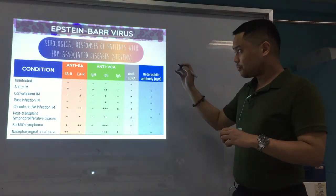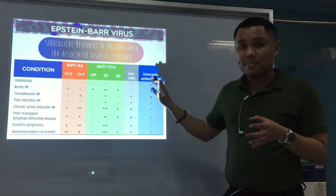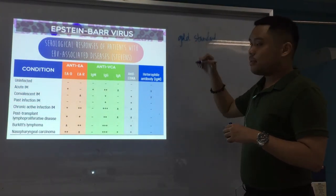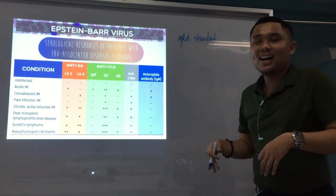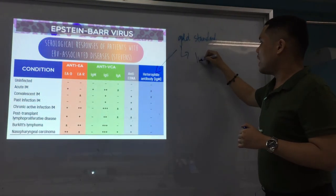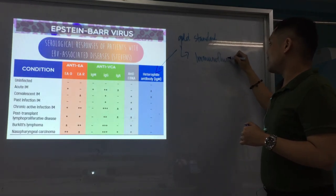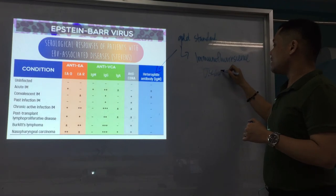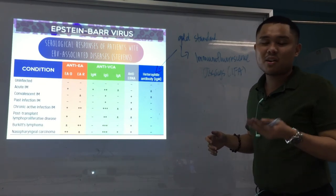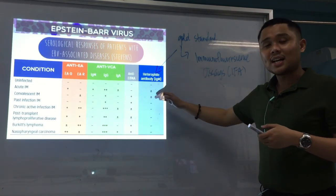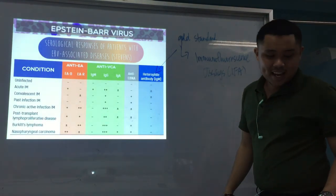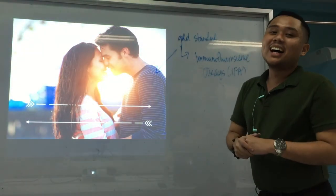There are a lot of ways to determine EBV antibodies, but the gold standard — the reference method — is immunofluorescence assays, IFA. In board exams, questions frequently involve the gold standard or reference method, so: the gold standard for EBV antibody detection is immunofluorescence assays, IFA. Basically, that's the end of our lecture on EBV serology.